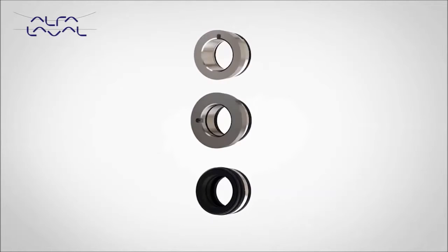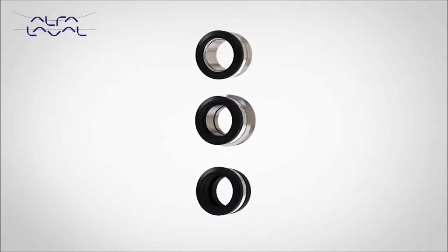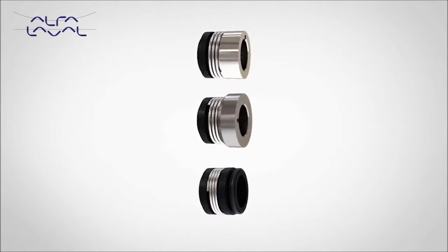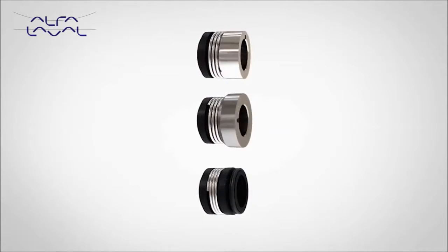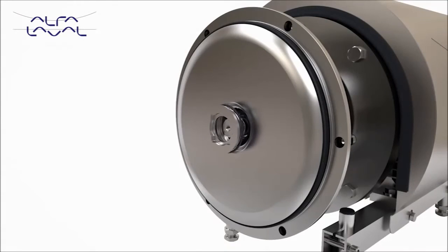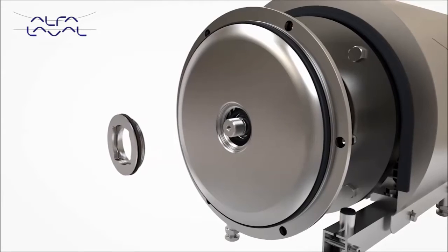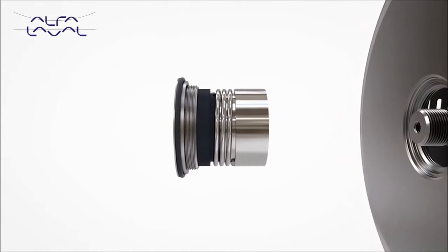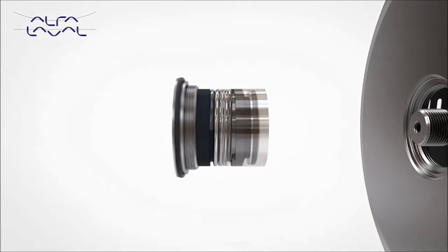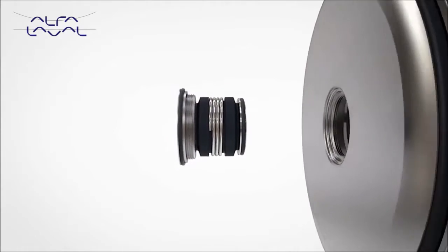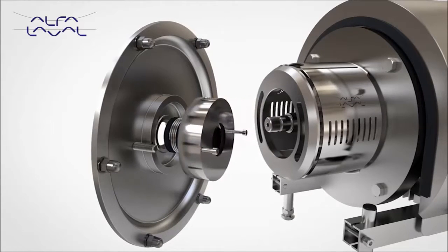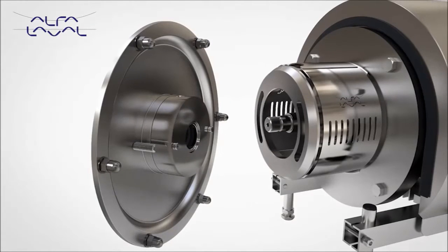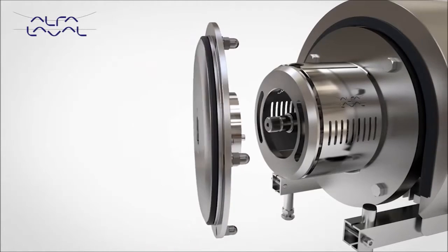The LKH pump is available with three seal options: single, single flush, and double mechanical, each option having a range of seal faces and elastomers to meet user application needs. The universal design also allows for easy retrofit conversion from single to single flush or double seal without component modification, enabling the user full process flexibility to change sealing solution should pump application change.